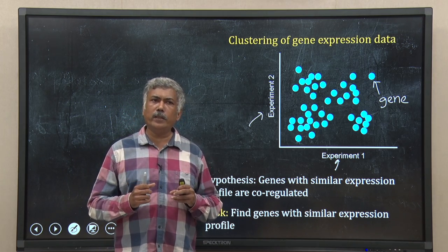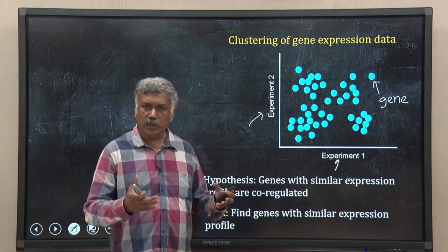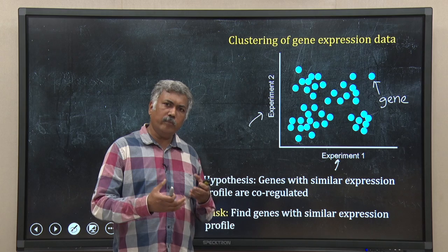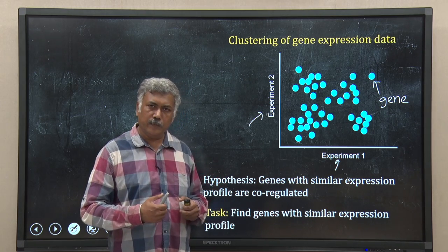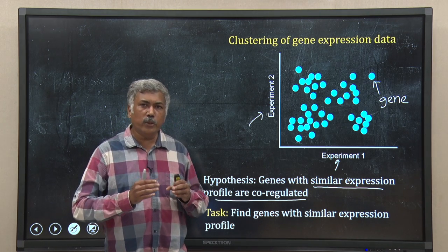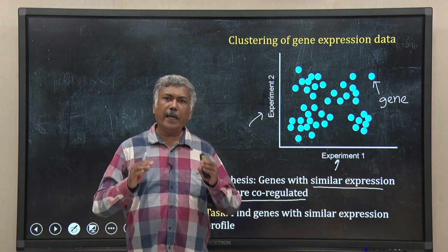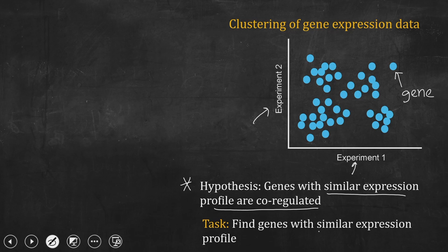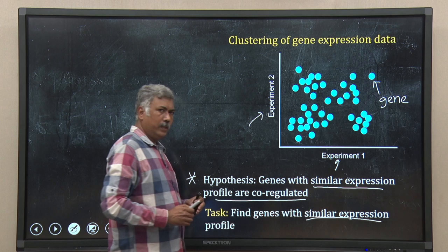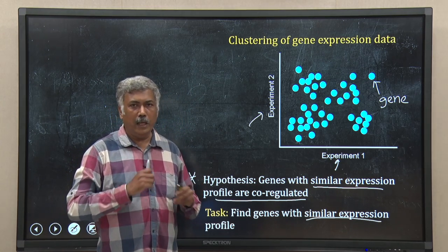Usually when we do this type of experiment, we try to identify genes which are co-regulated. What do I mean by co-regulated? Genes which are controlled by the same pathway, same transcription factors — you expect them to behave in the same fashion in your experimental condition. So the hypothesis is that genes with similar expression are actually co-regulated.